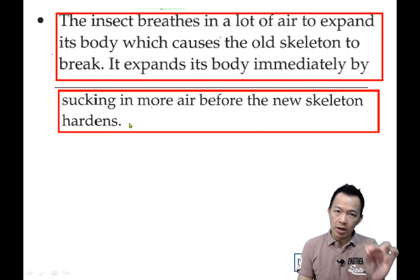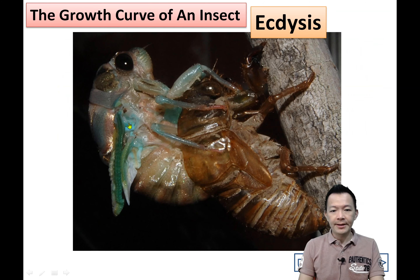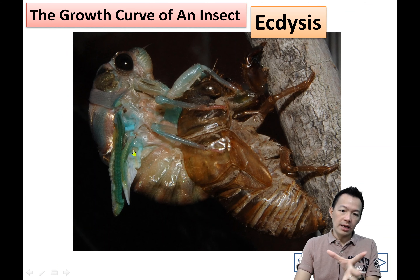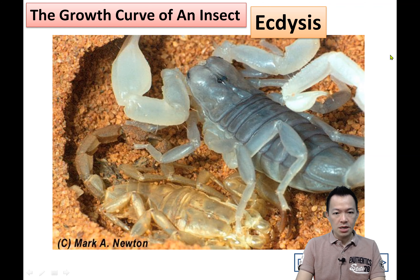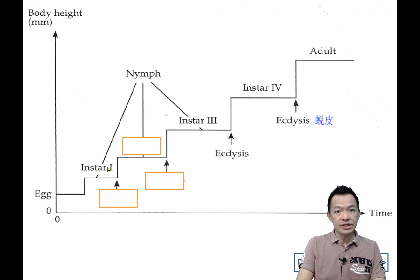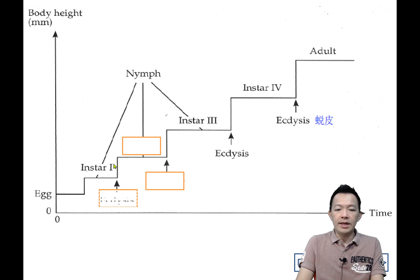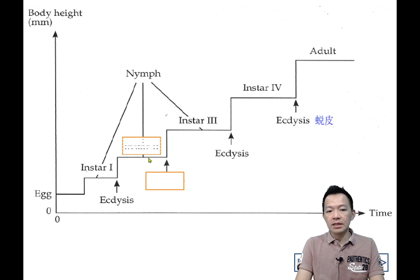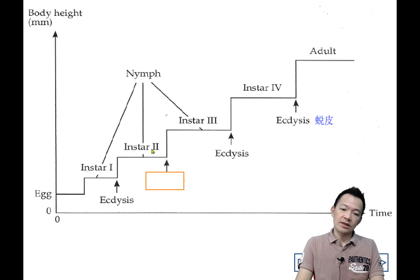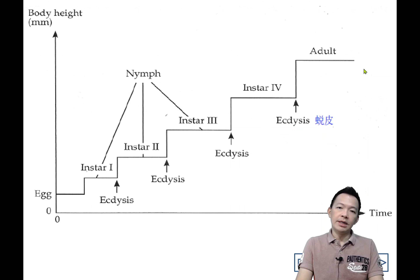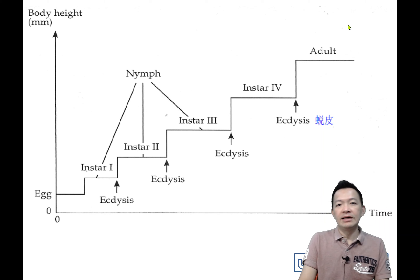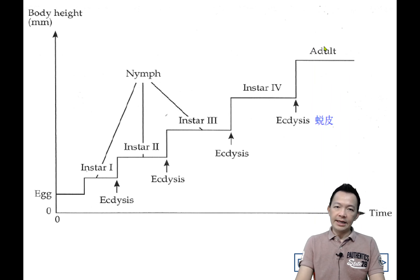So this is what we call moulting — the old one is shed, and the new one comes out. Now, from the egg it hatches into Instar 1. When Instar 1 gets enough nutrients, it becomes big enough and one day undergoes the ecdysis process — and the body suddenly grows to become Instar 2. After another few days, they continue the ecdysis process and become Instar 3, then Instar 4, and finally become adult.